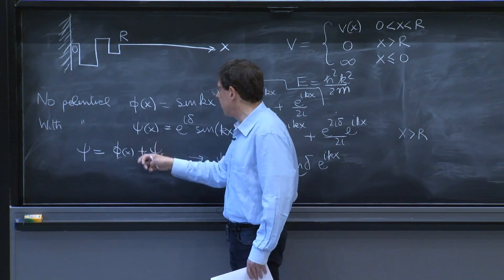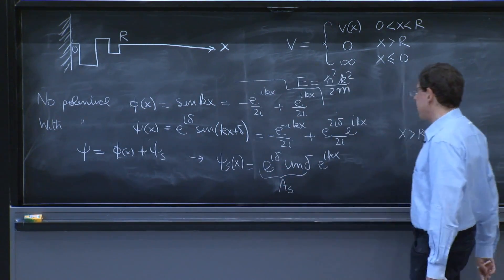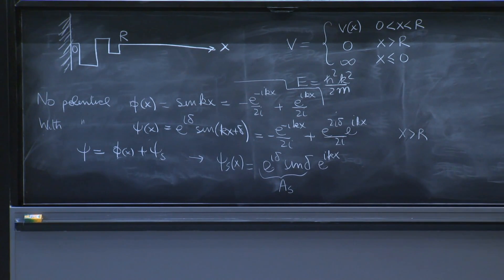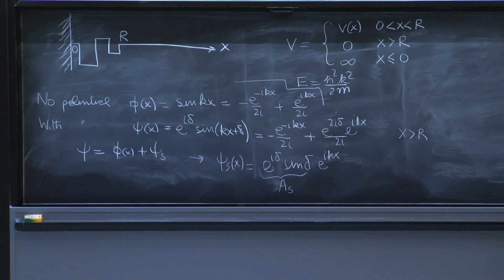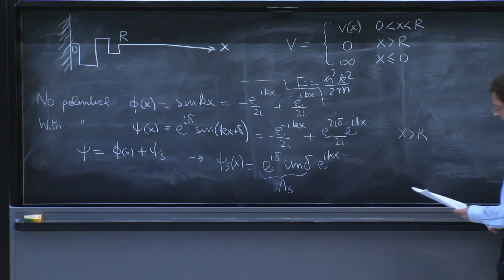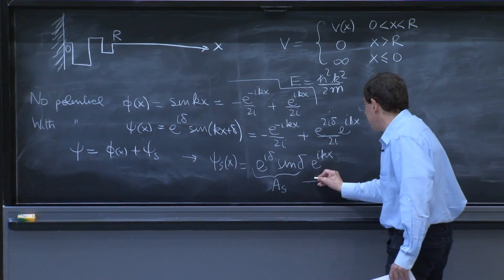Because if there was no scattering, the wave function would just behave like the no potential wave function. But due to the potential, there is an extra piece.